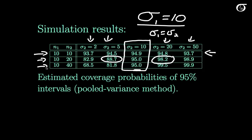If we make the difference in sample sizes more extreme, we see bigger and bigger differences. We'd be claiming a 95% confidence interval, but in reality it might be closer to 68.5% — way off. So the pooled variance t-procedure can perform very poorly when the standard deviations are quite different, and this is especially bad when the sample sizes are quite different as well.